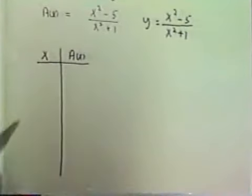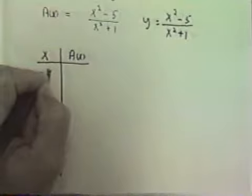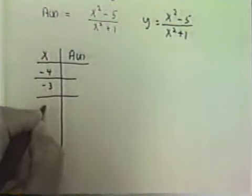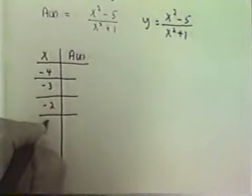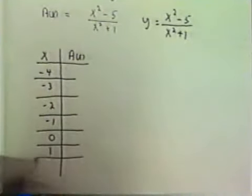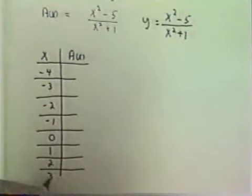Well let's look at negative 4, negative 3, negative 2, negative 1, 0, 1, 2, 3, and 4.